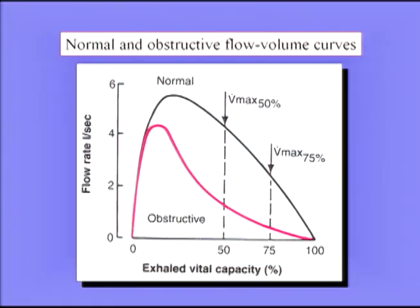The cause of the obstruction is dynamic compression of the airways, and the key message is that during dynamic compression, airflow is independent of effort — there's no way the patient can increase his effort to improve flow. Another way to look at obstruction is by plotting flow-volume curves. The typical obstructive pattern shows a scooped-out appearance with very low flow rates at low lung volumes, where flow rate is principally determined by the very small airways, which in chronic bronchitis are diseased.